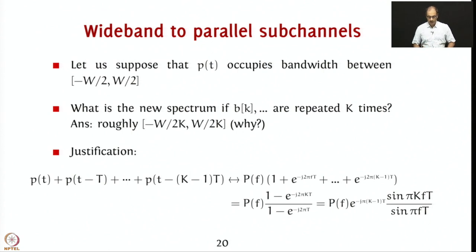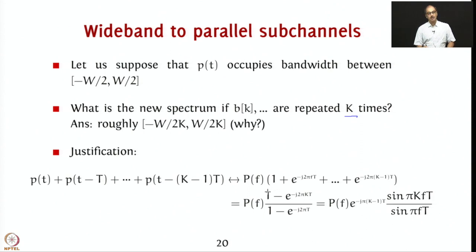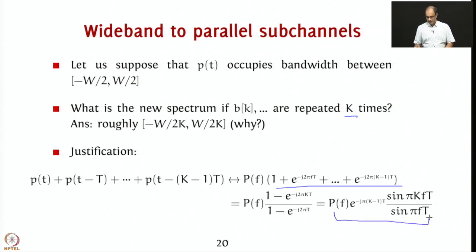Suppose that p(t) occupies bandwidth between -W/2 to W/2. The new spectrum, if you repeat b_k K times, is roughly -W/(2K) to W/(2K). The justification is that p(t) + p(t-T) + ... + p(t-(K-1)T), if you take the Fourier transform, every delay results in e^(-j2πfT) extra multiplication. Doing a geometric series summation gives a sinc-like shape, and as you make K larger, the spectrum becomes narrower and narrower.